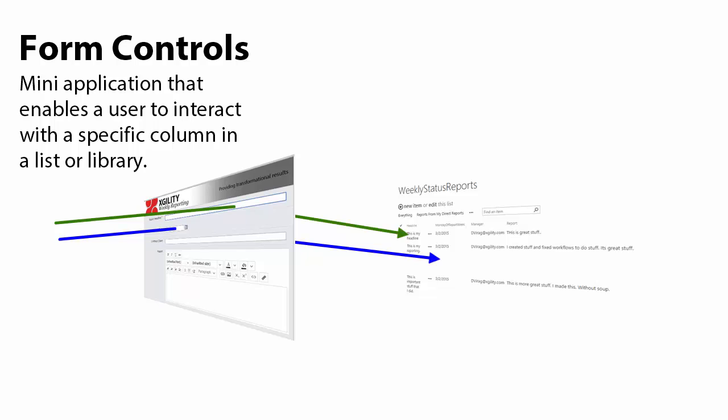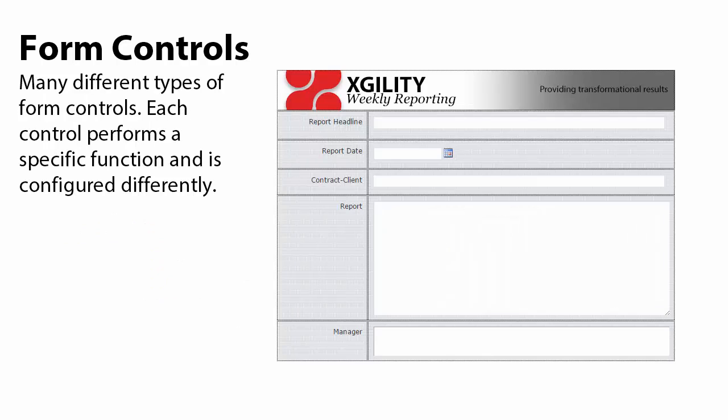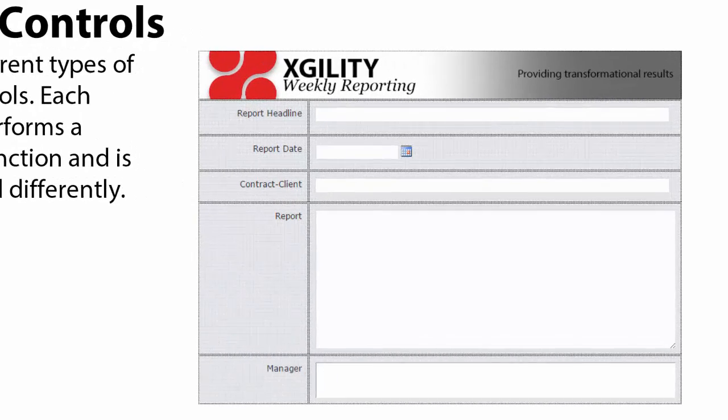A form control is a mini application that enables a user to interact with a specific column in a SharePoint list or library, or take an action on the form. There are many different types of form controls that can be added to a form, and each one performs a specific function and is configured differently.